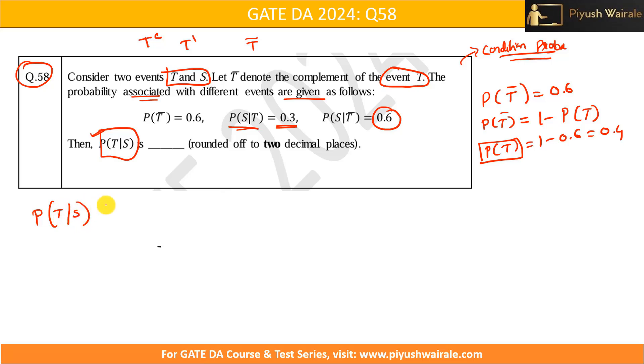Now, by just applying the conditional probability formula. So, what this will be? This will be probability of S given T into probability of T divided by probability of S. So, by using Bayes theorem, right? By using Bayes theorem, I can write like this. So, probability of T I have, probability of S given T I have. But what I need to find out? Probability of S.